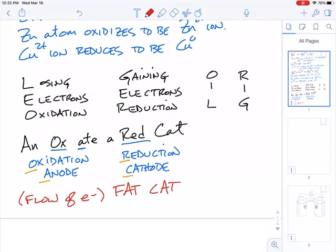the flow of electrons, we can remember fat cat. Fat cat helps us remember that electrons flow from the anode to the cathode.